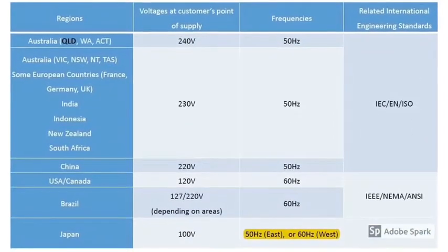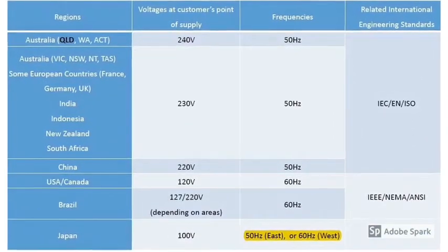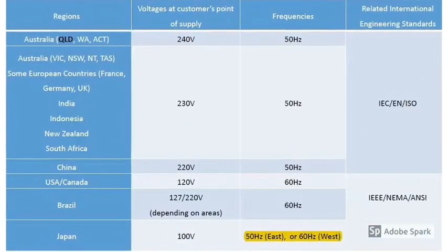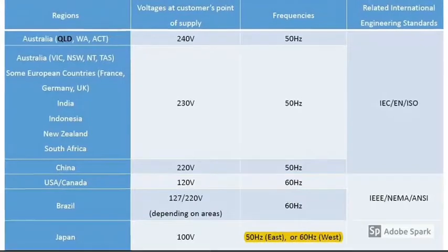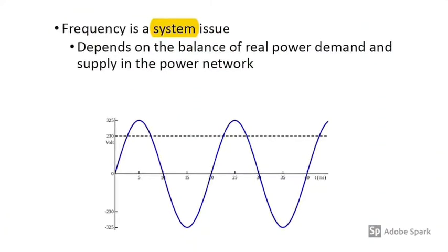A special case is Japan, with 50 hertz on the east and 60 hertz on the west. Frequency is important and it is a system issue.